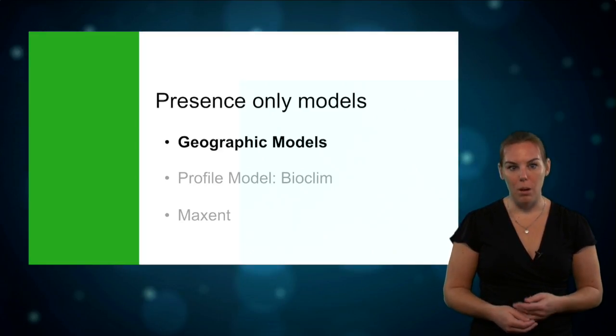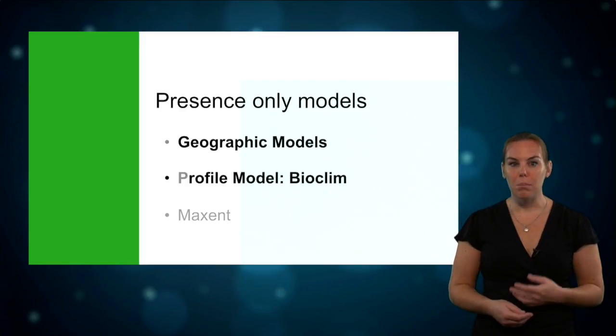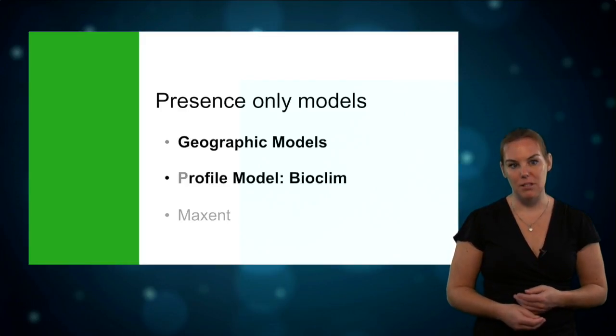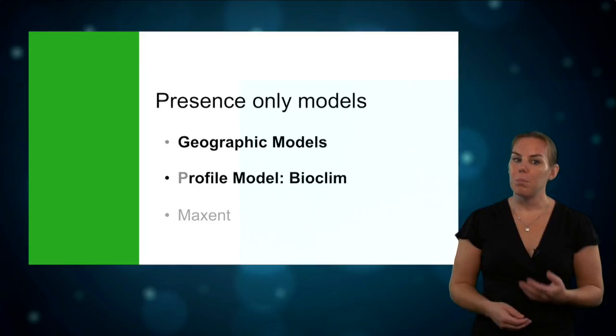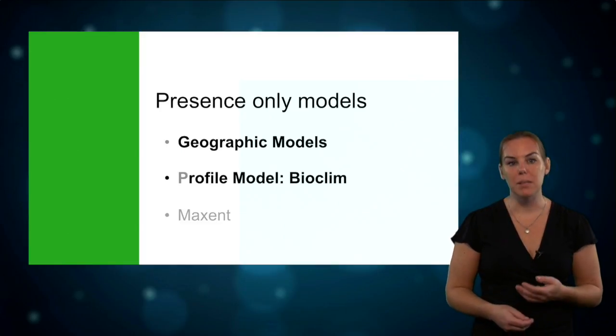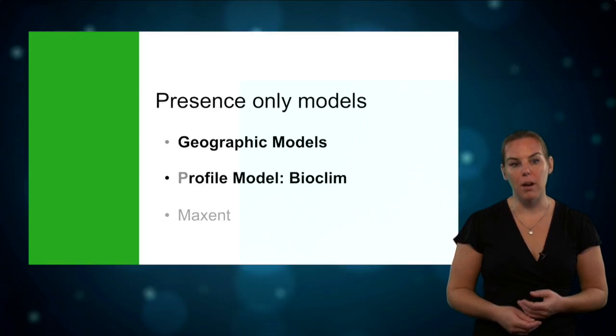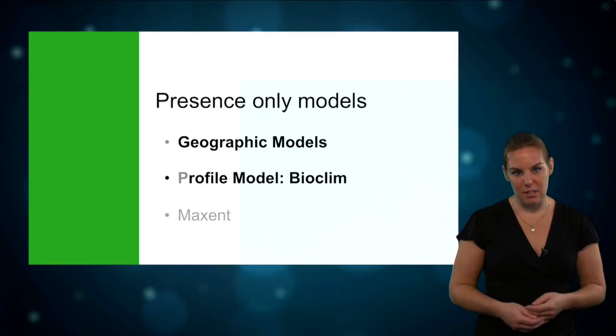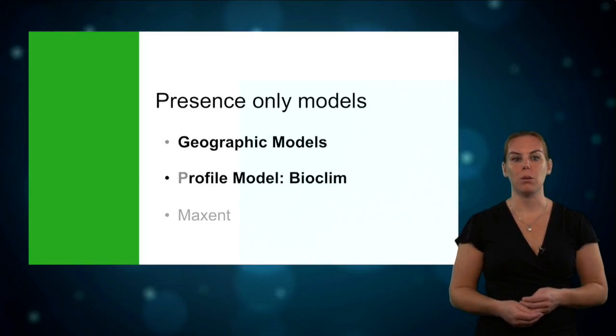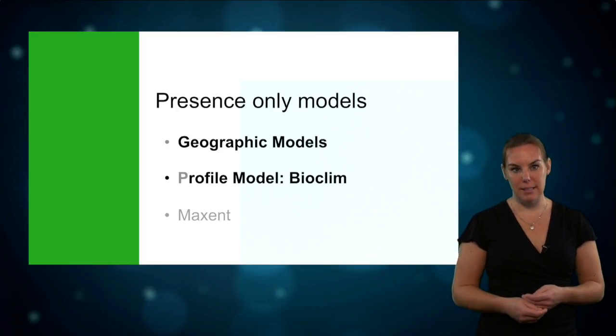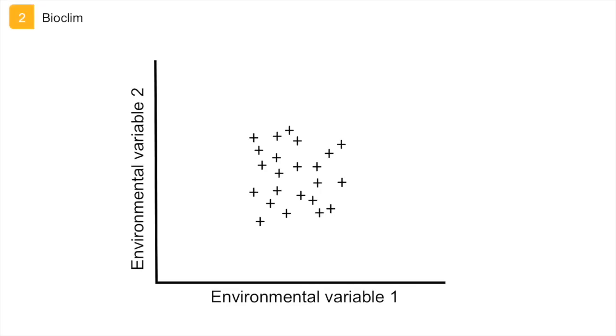The next type of models are profile models, which are the most basic actual species distribution models. They profile the environments where a species can be found. The best-known profile model is Bioclim, which is considered as the first species distribution model. Development of this model started in Australia in the mid-1960s. Bioclim is a relatively simple and easy-to-understand model.